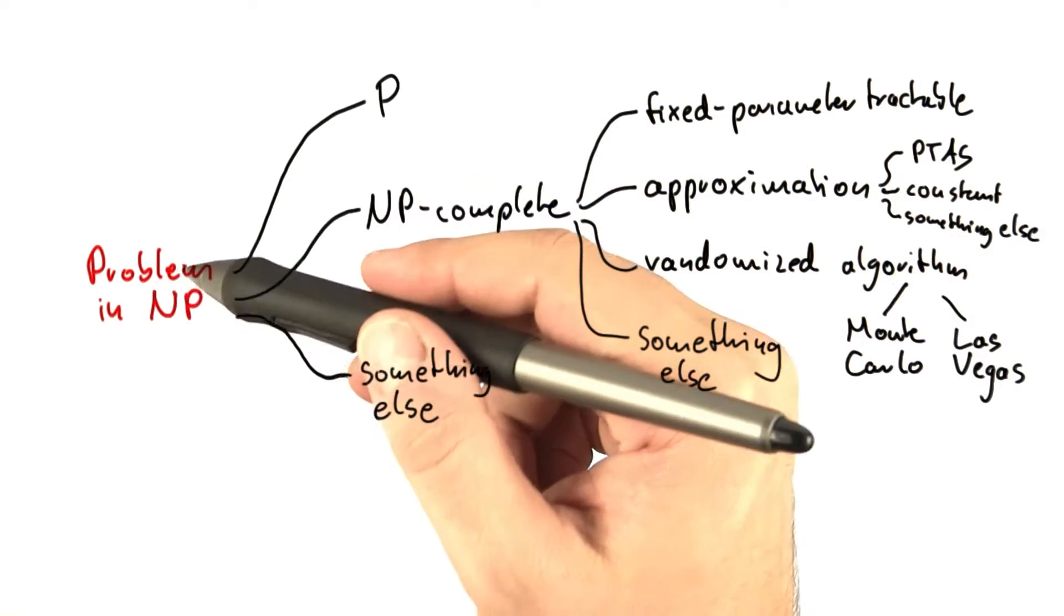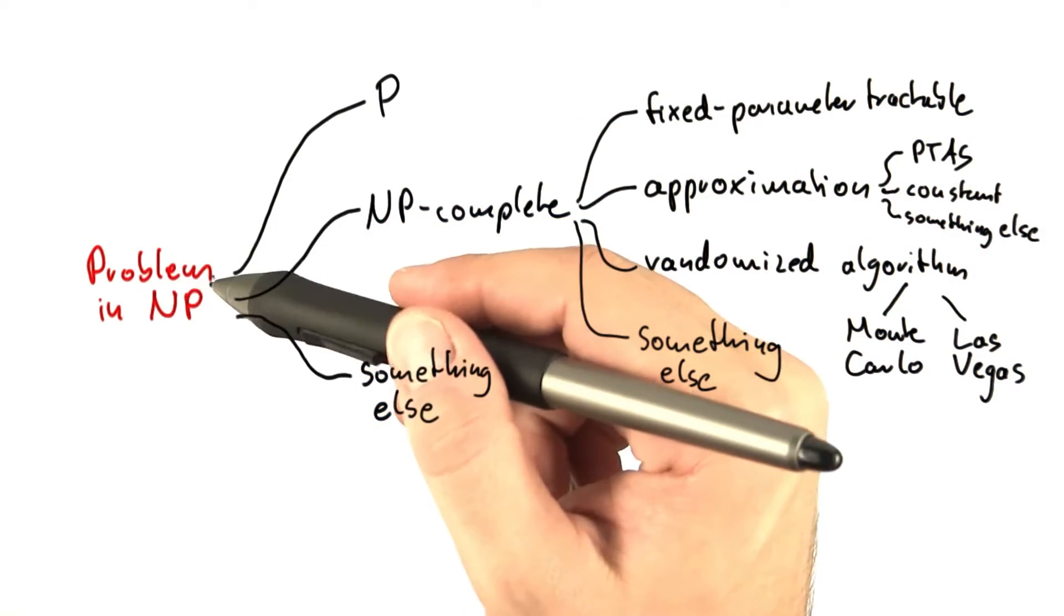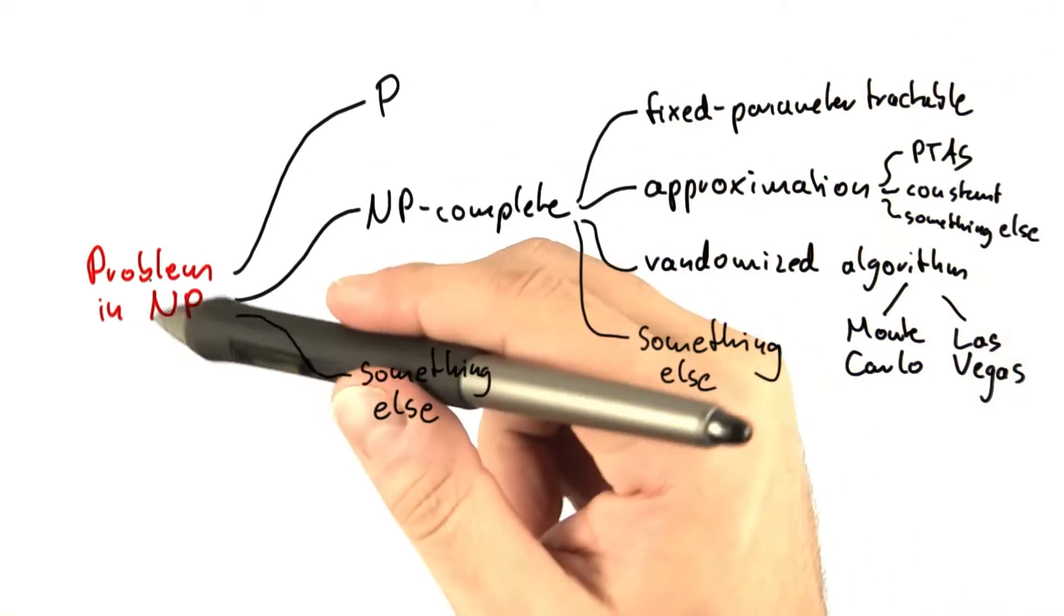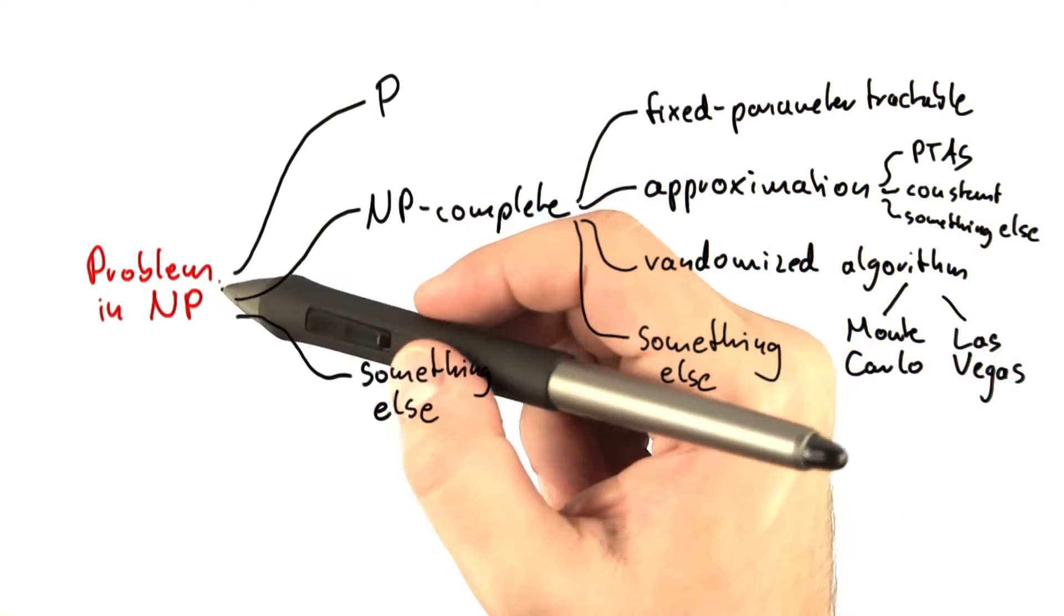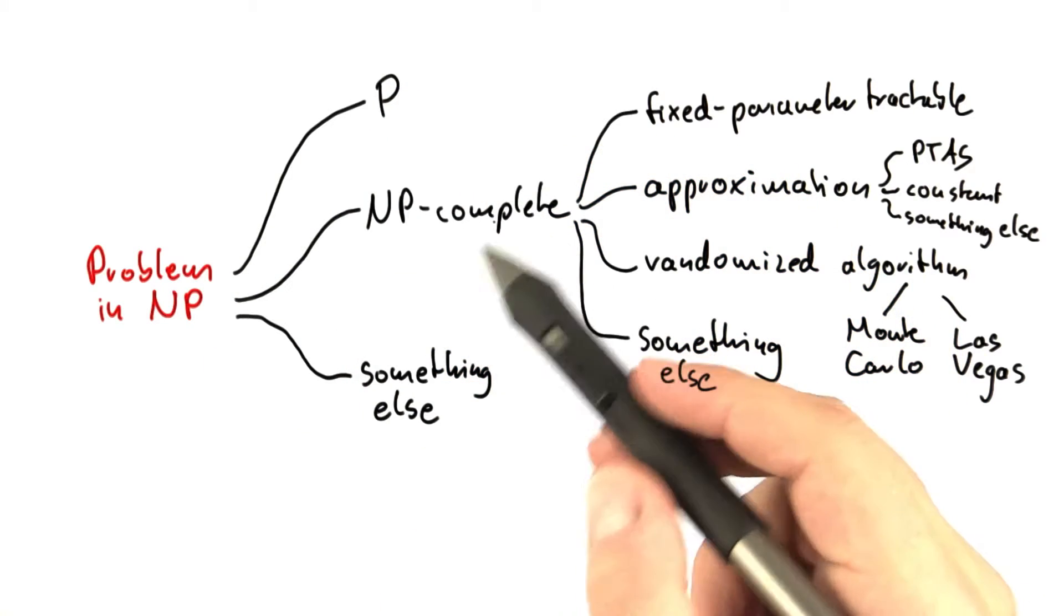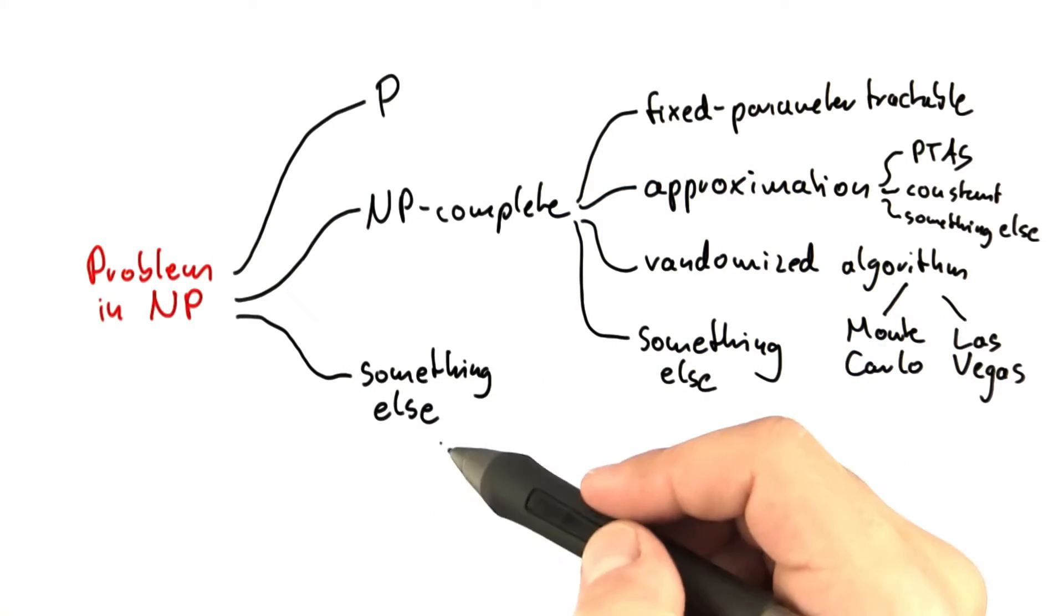Now if we put all of this knowledge together and just look at the problems that are in NP, then there's a lot of different possibilities for the properties of that problem. So either the problem if it's in NP could be in P, or it is NP complete, or it might even be something else.